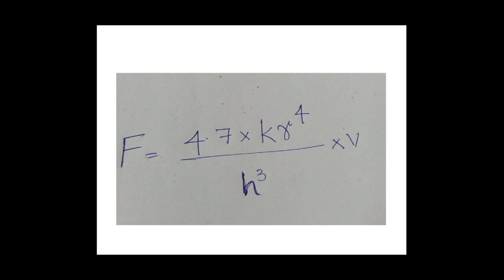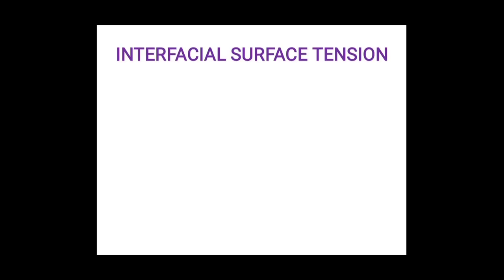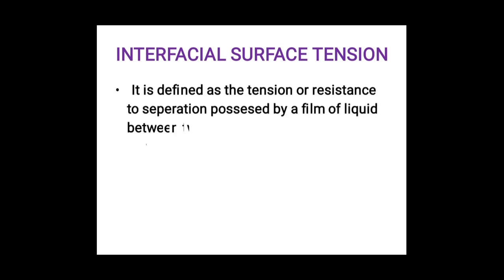Greater the space, the less this force will be. So we need to adapt the denture more closely — less space means surface tension increases and retention increases. Greater the radius, that is greater the area covered by the denture, greater will be the interfacial surface tension and greater will be the retention. Interfacial surface tension is defined as the tension or resistance to separation possessed by a film of liquid between two well-adapted parallel surfaces. Wettability of fluid is inversely proportional to the surface tension of the surfaces.